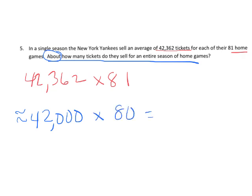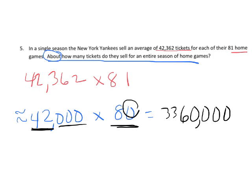Now we can multiply: 42 times 80. That's 3,360, and then we have three zeros plus this extra zero — one, two, three, four — so our estimation is three million, three hundred sixty thousand.